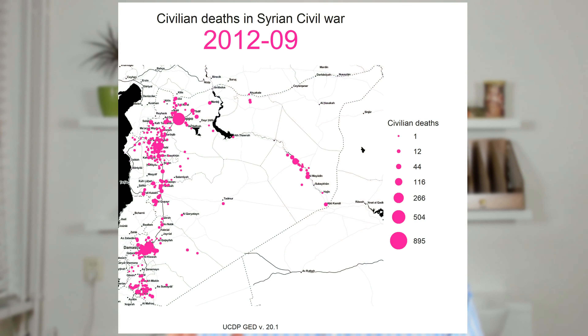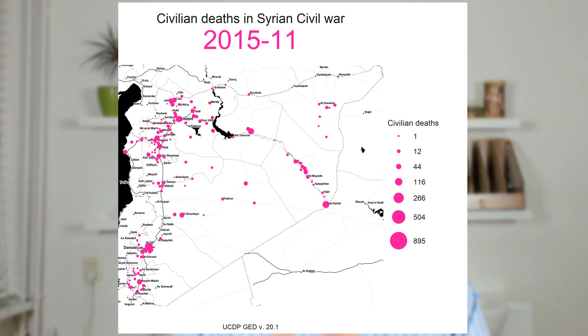Hi people, this is Milos and I'm back with another data visualization and GIS tutorial which is going to unlock your potential and show you how you can create powerful and effective animated bubble maps with R. We're going to be working on conflict data and creating an animated bubble map of the Syrian civil war with a focus on civilian fatalities. You will learn how to create these animated bubble maps using ggplot2 and gganimate packages. Without further ado, let's roll.